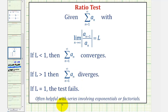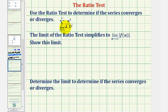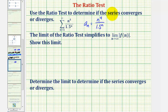The ratio test is often helpful when the series involves an exponential or a factorial. Notice here we have an exponential in a_n, where a_n is equal to n to the fourth divided by 1.5 raised to the power of n.